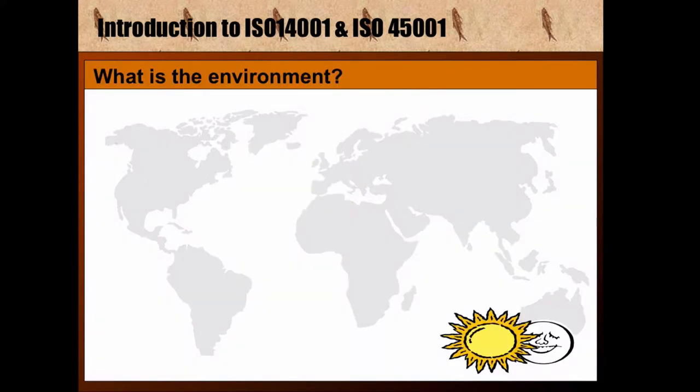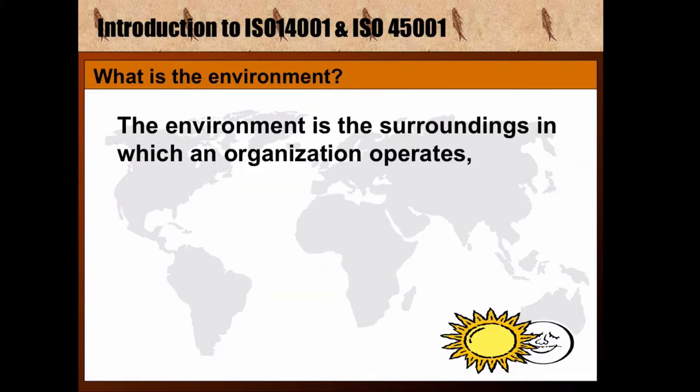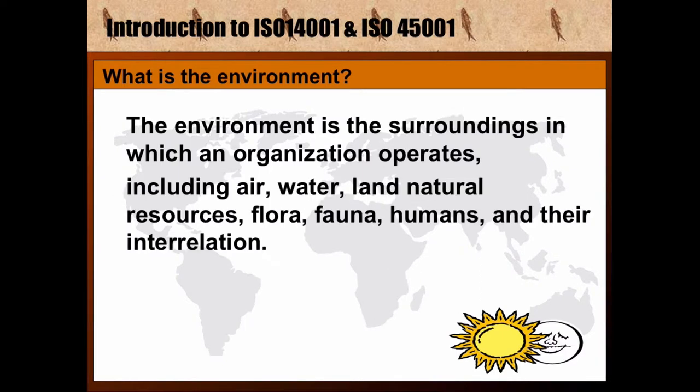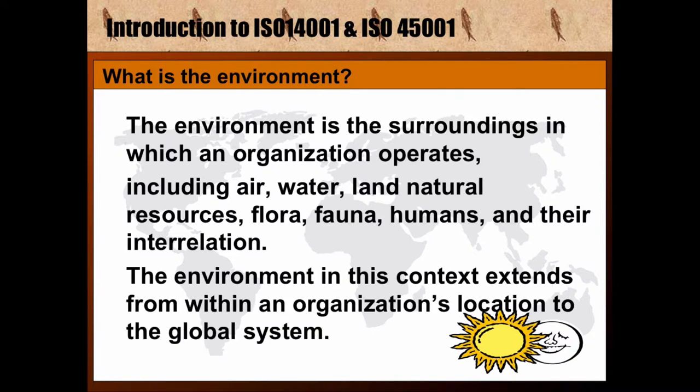The environment is the surroundings in which an organization operates, including air, water, land, natural resources, flora, fauna, and humans, and their interrelation. The environment in this context extends from within an organization's location to the global system, as the next slide will show.